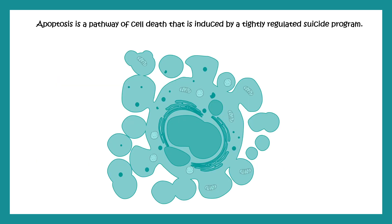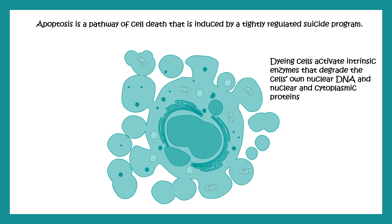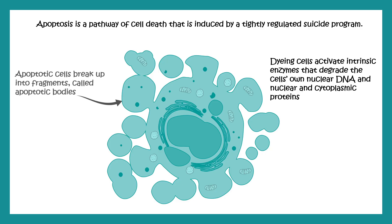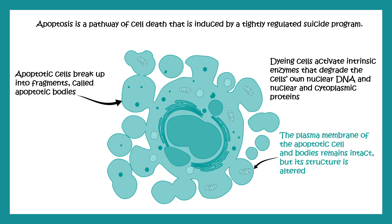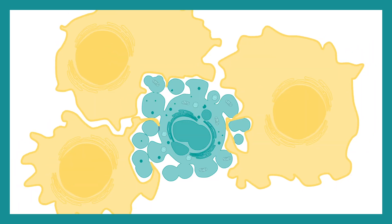Apoptosis is a highly regulated pathway and a suicide program. In this process, the dying cell activates several intrinsic enzymes that degrade the cell's own DNA, nucleic acids, and cytoplasmic proteins — it is an auto-destruction program. Apoptotic cells break into fragments known as apoptotic bodies, which are taken up by specific phagocytes. Importantly, the plasma membrane of apoptotic cells does not disintegrate; membrane integrity is maintained, though its composition is altered, which attracts phagocytes.